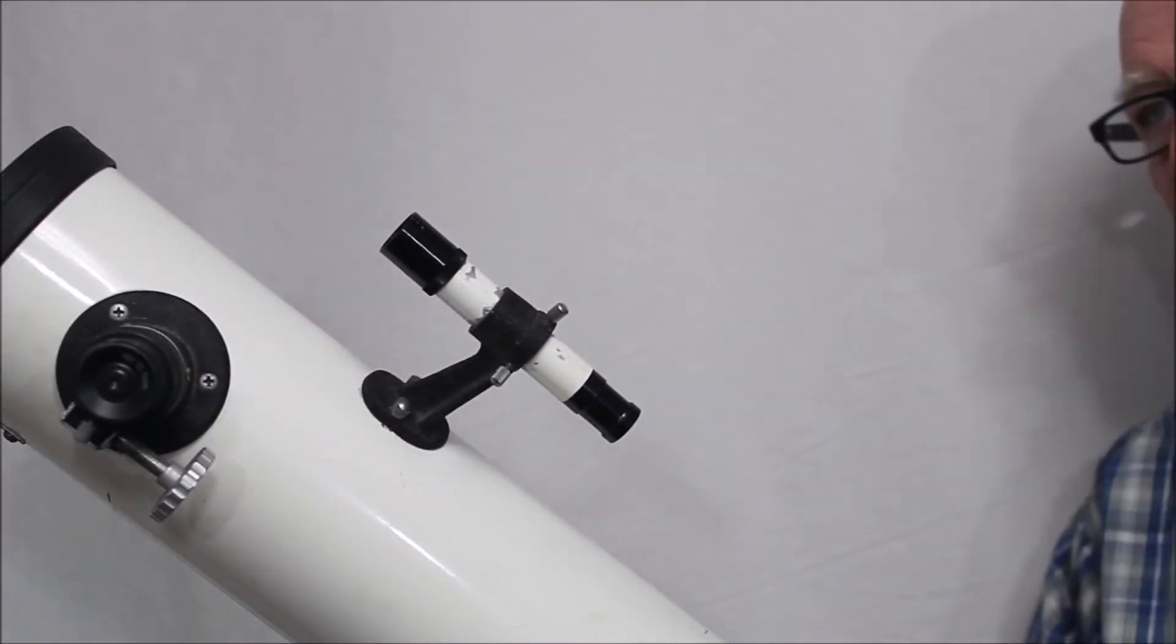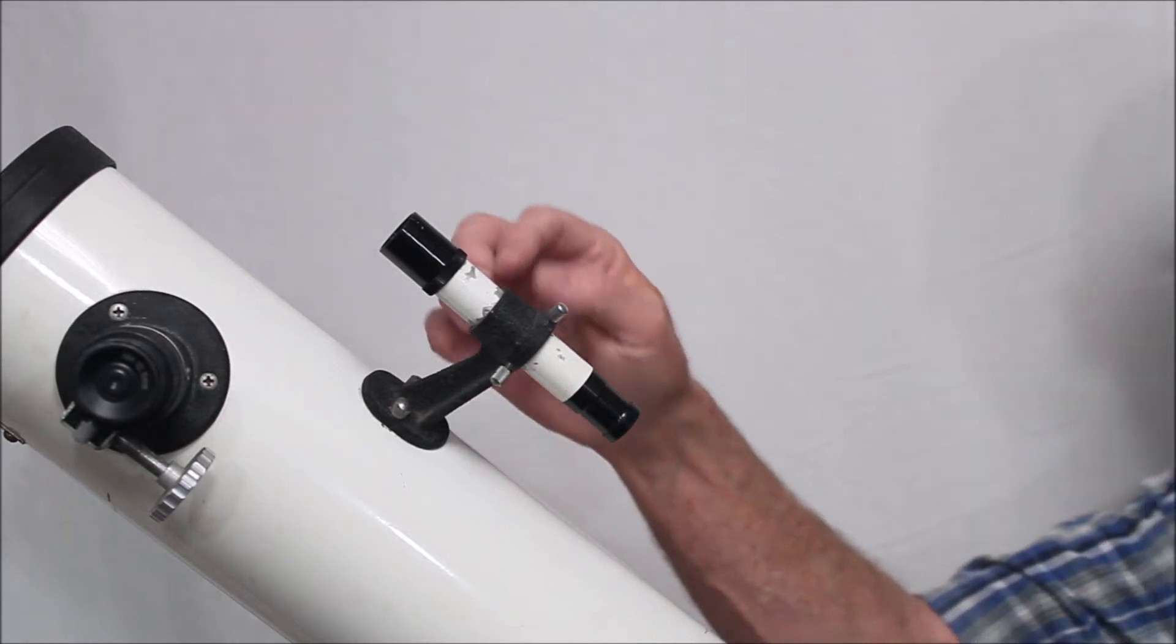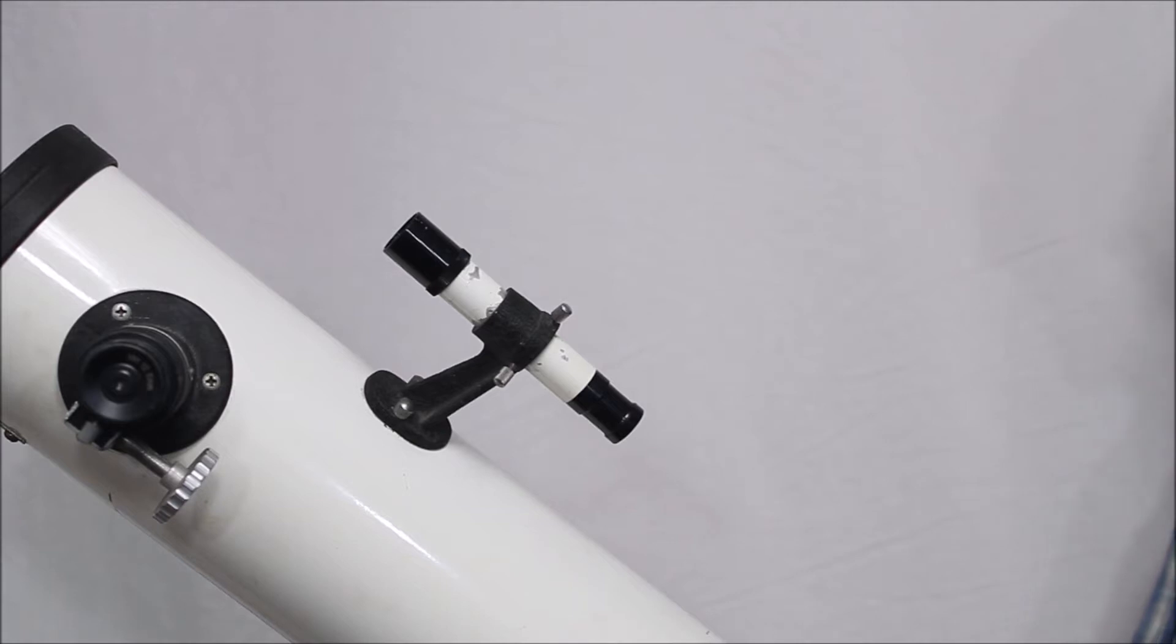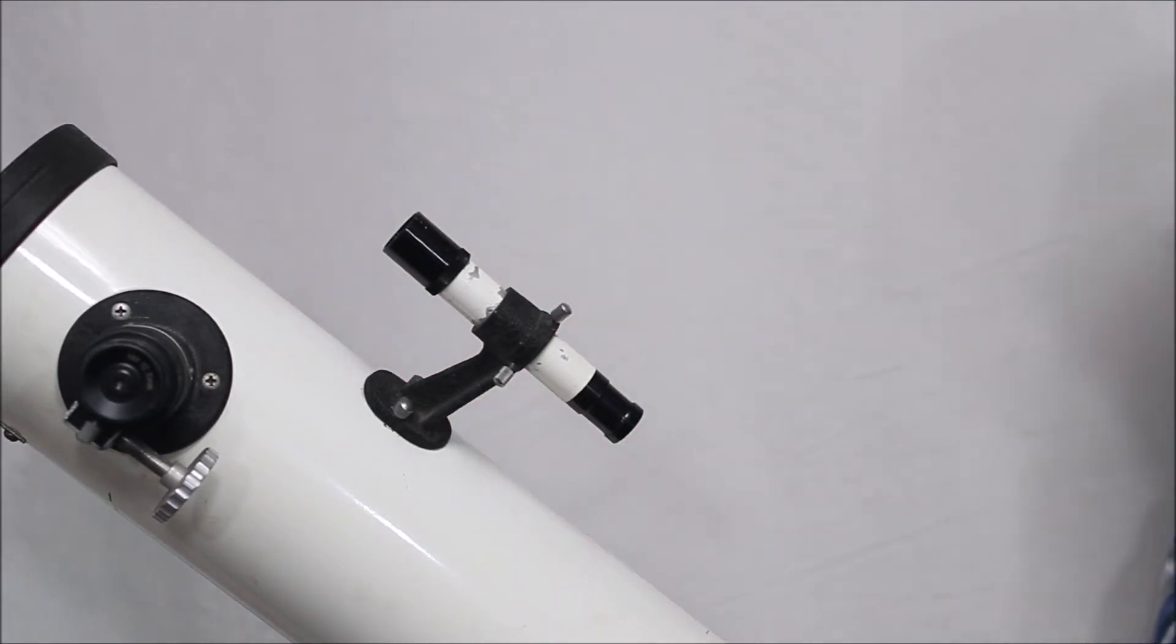One of the funnest things about this telescope is the cute little finder. This is a 5x15 finder and in the pictures it makes the telescope look a lot bigger because this thing is so tiny and diminutive.